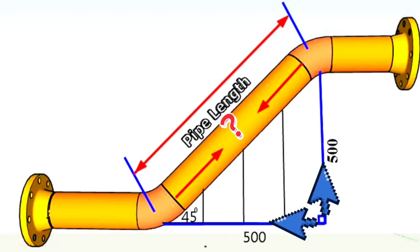Let's complete these cross lines into a triangle. For this, we move this red line, which shows the distance between the elbows, parallel to the bottom, and connect the dashed lines to form a triangle.